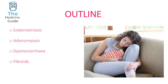So let's get started. The high yield chronic abdominal pain conditions which present in Obs and Gynae tend to involve endometriosis, adenomyosis, dysmenorrhea, and fibroids. These are the classic presentations and topics which crop up again and again in medical school final exams. We'll get started with endometriosis first.